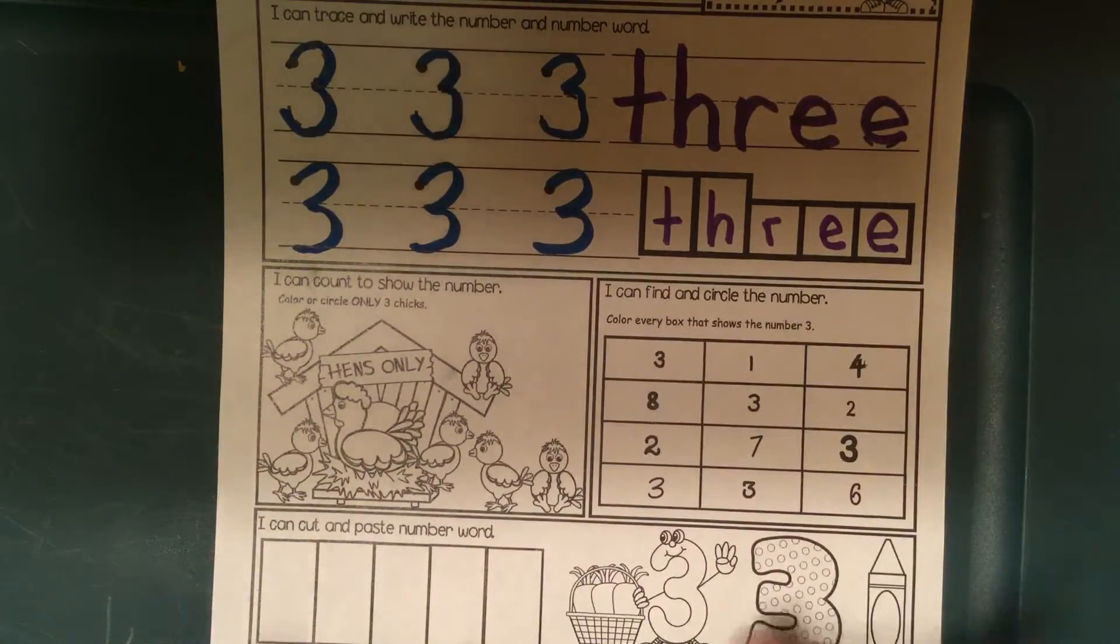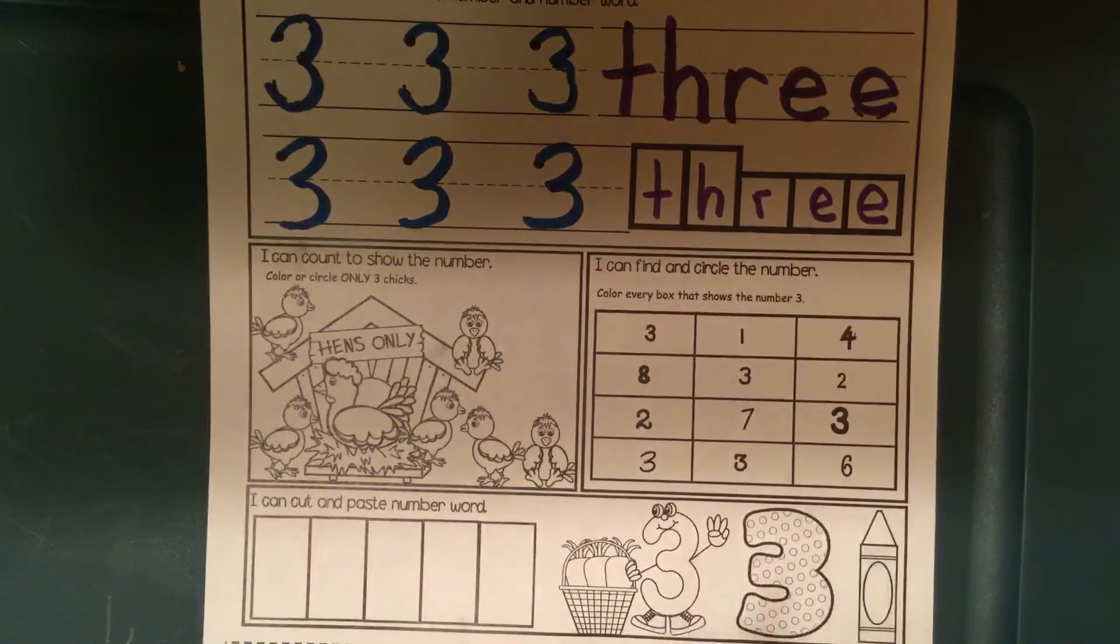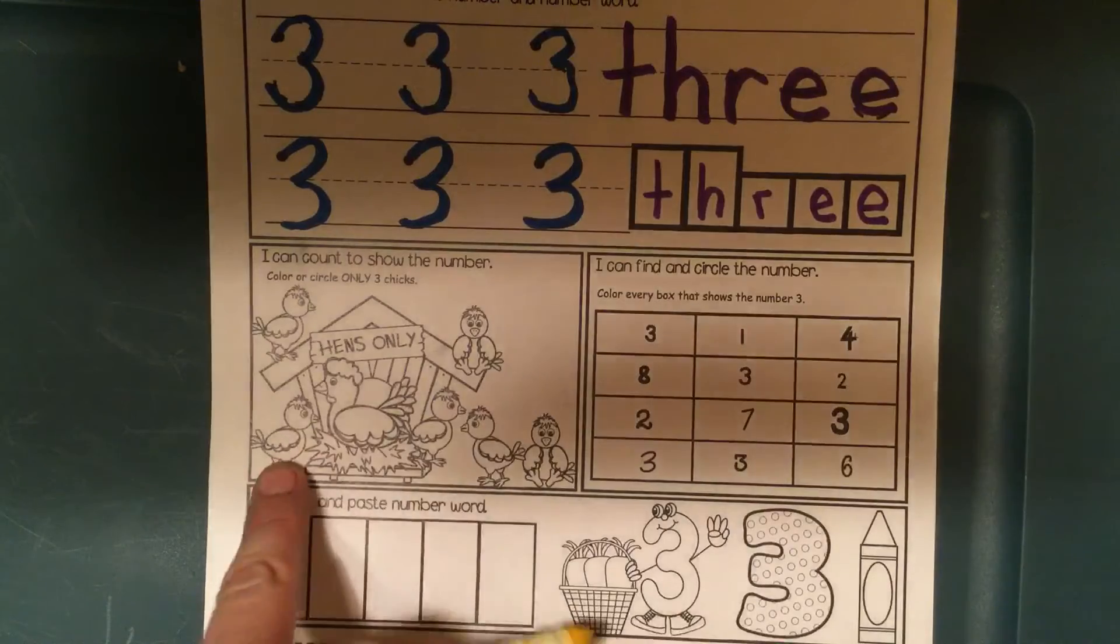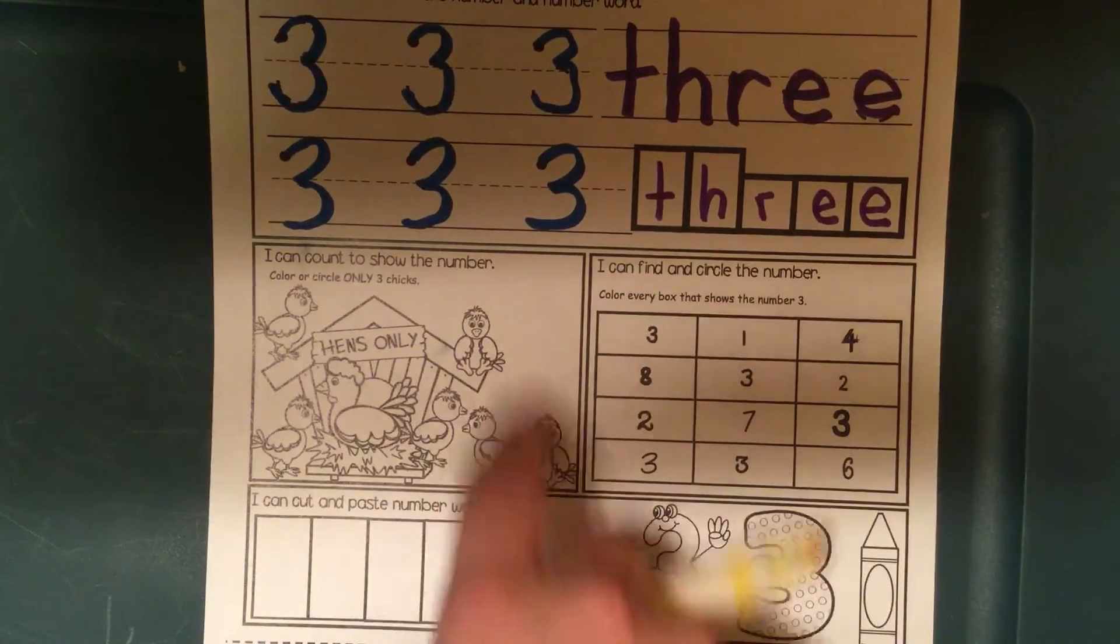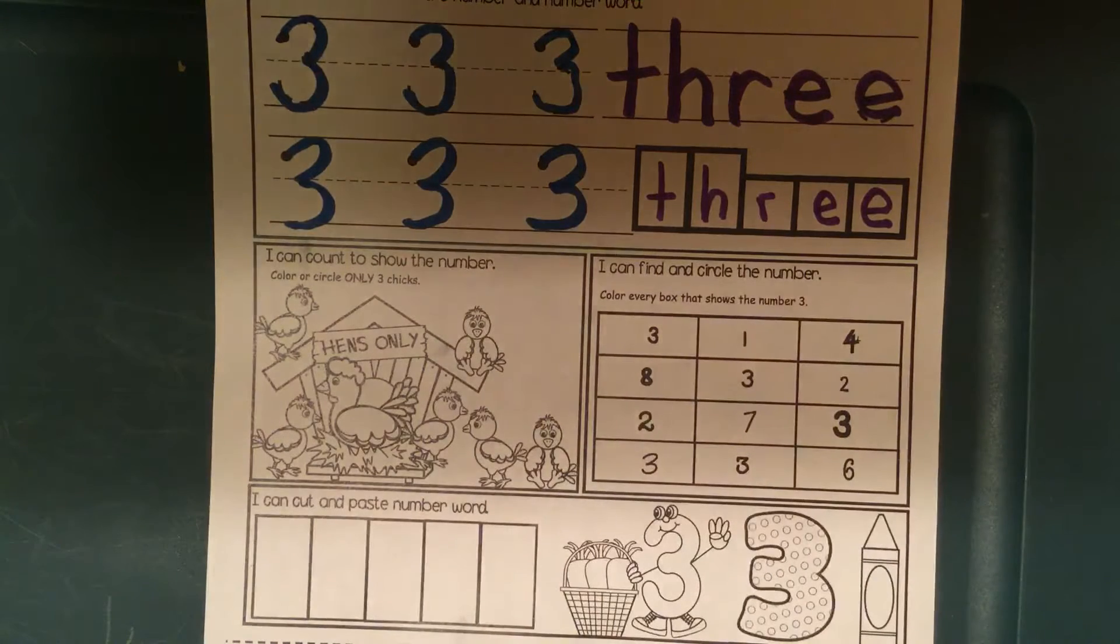Now, we're going to look at the bak-akwe's here. First, how many bak-akwe's are there? Beisic, Nizh, Niswe, Niman, Nanan, Ningodasso, Nizhwasso. Nizhwasso bak-akwe.